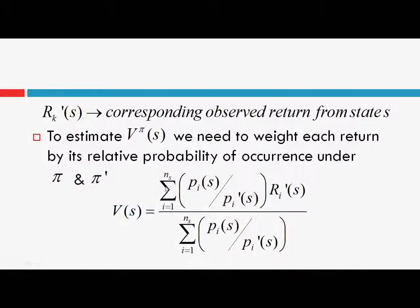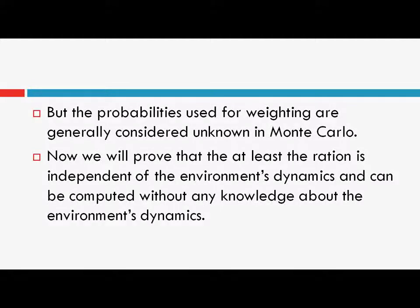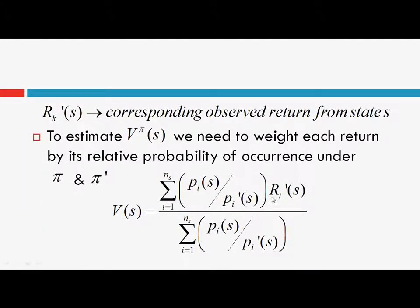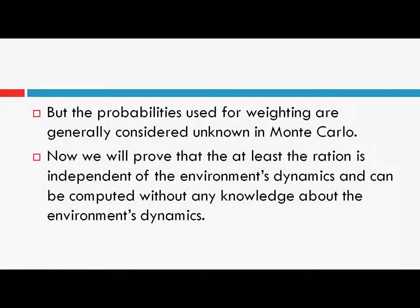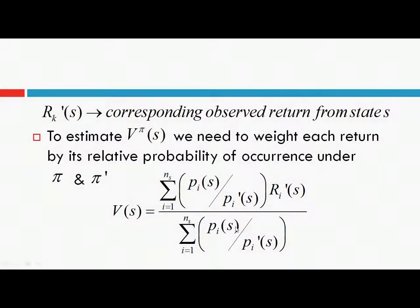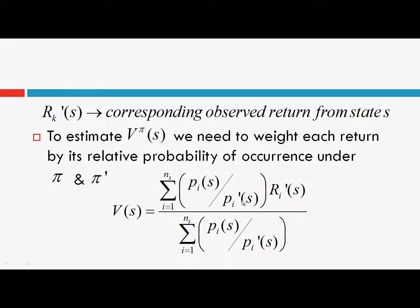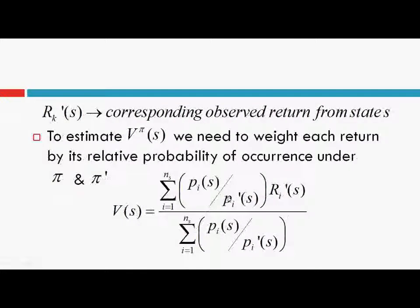These probabilities are generally unknown — we do not know the probability of occurrence under policy pi. The probabilities used for weighting are generally considered unknown in Monte Carlo methods. All we need is to prove that this ratio is independent of the environment's dynamics. Even if we do not know the complete dynamics of the environment, we can still compute this ratio. We do not care about knowing pi(s) or pi-dash(s) independently — all we need is the ratio pi over pi-dash.